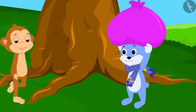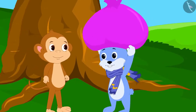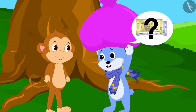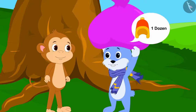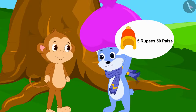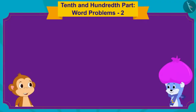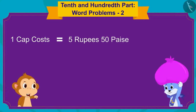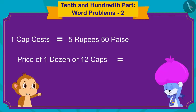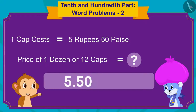Just then, Babban was passing by. Bunny stopped Babban and asked him: Babban, how much money will I get for one dozen caps if I sell one cap for 5 rupees and 50 paise? It is very easy, Bunny. A cap costs 5 rupees and 50 paise. To find the price of a dozen or 12 caps, we have to multiply the price of one cap by 12.